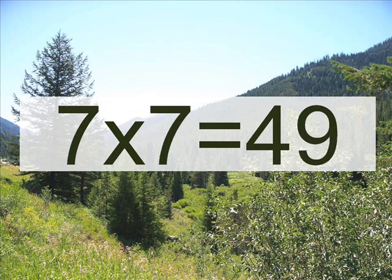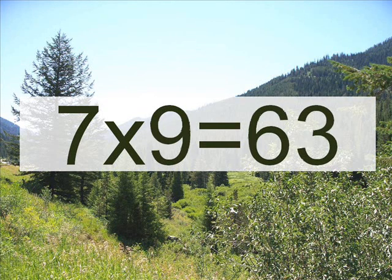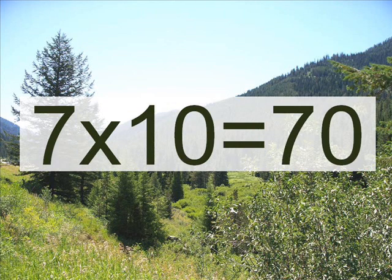7 x 7 equals 49. 7 x 7 equals 49. 7 x 8 equals 56. 7 x 8 equals 56. 7 x 9 equals 63. 7 x 9 equals 63. 7 x 10 equals 70. 7 x 10 equals 70.